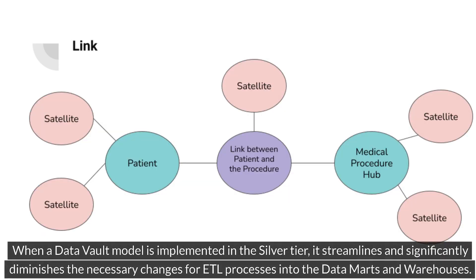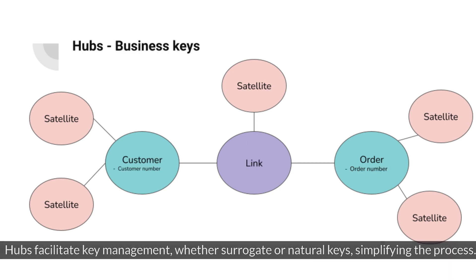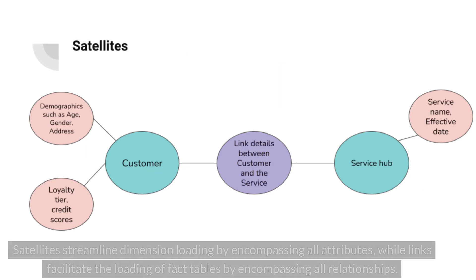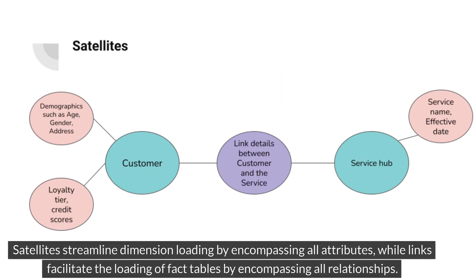When a Data Vault model is implemented in the silver tier, it streamlines and significantly diminishes the necessary changes for ETL processes into the data marts and warehouses. Hubs facilitate key management, whether surrogate or natural keys, simplifying the process. Satellites streamline dimension loading by encompassing all attributes, while links facilitate the loading of fact tables by encompassing all relationships.